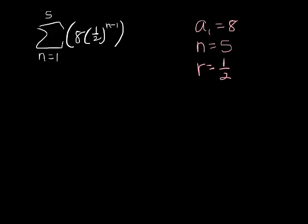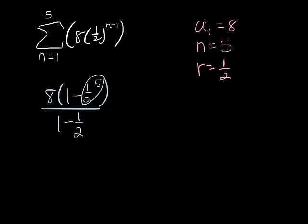So we have a sub 1 times 1 minus r to the n over 1 minus r. So let's see how this is going to work. I'm going to try again my best to not use my calculator. Now, I know that 1 half to the fifth power is 1 over 32. So I'm going to have 8 times 1 minus 1 over 32 all over 1 half.